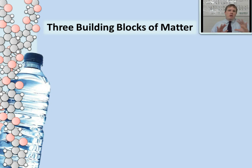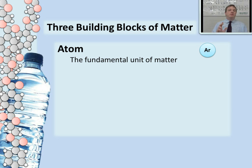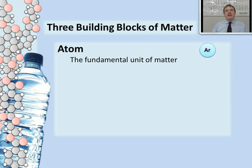The first and most basic building block of all is the atom, which is the fundamental unit of matter — the smallest piece of a substance that is still that same elemental substance. For example, the smallest piece of argon is this argon atom pictured here. If you were to somehow break this atom down any further and split the atom apart, it's no longer argon. It would change into a different kind of atom. That's why we say atoms are the smallest fundamental unit of matter.